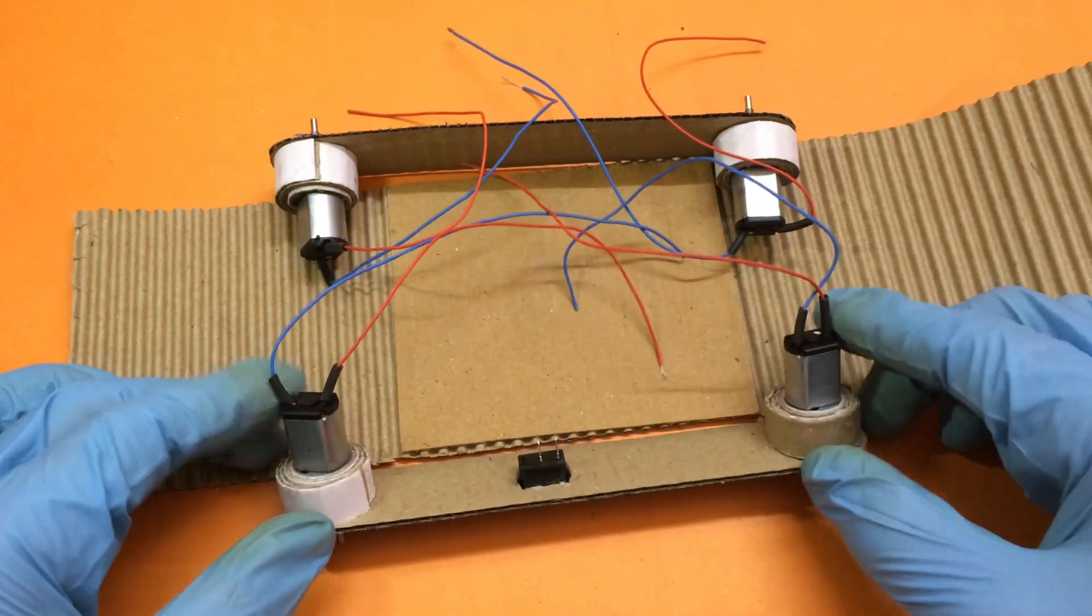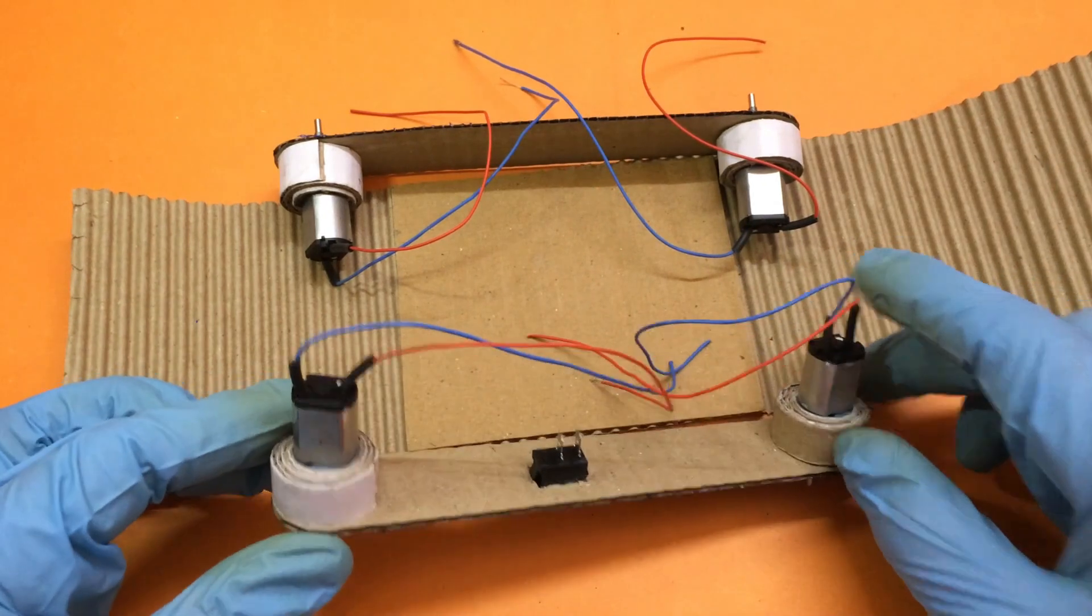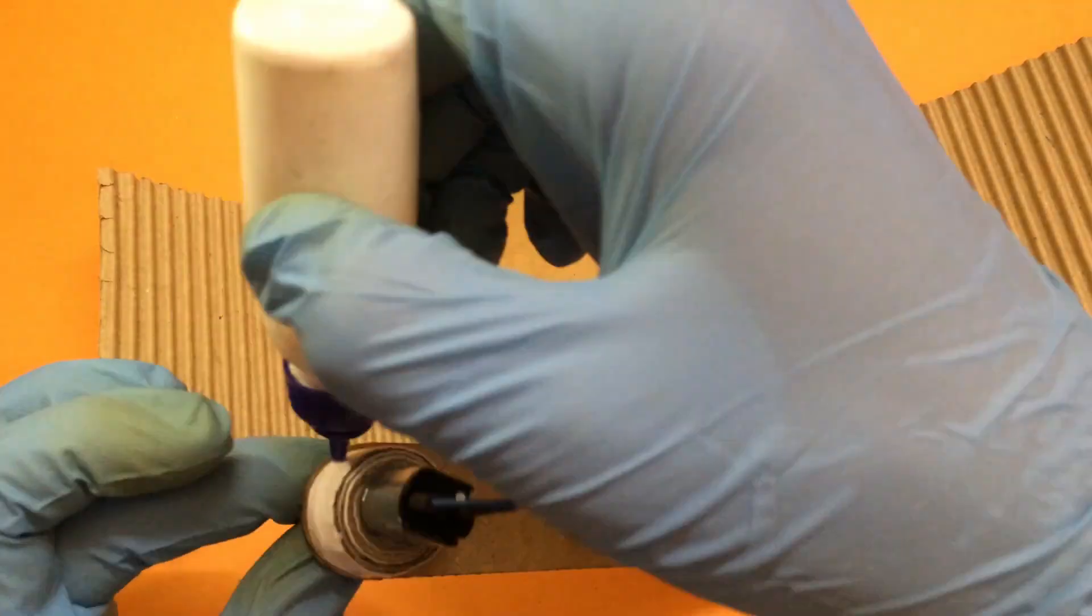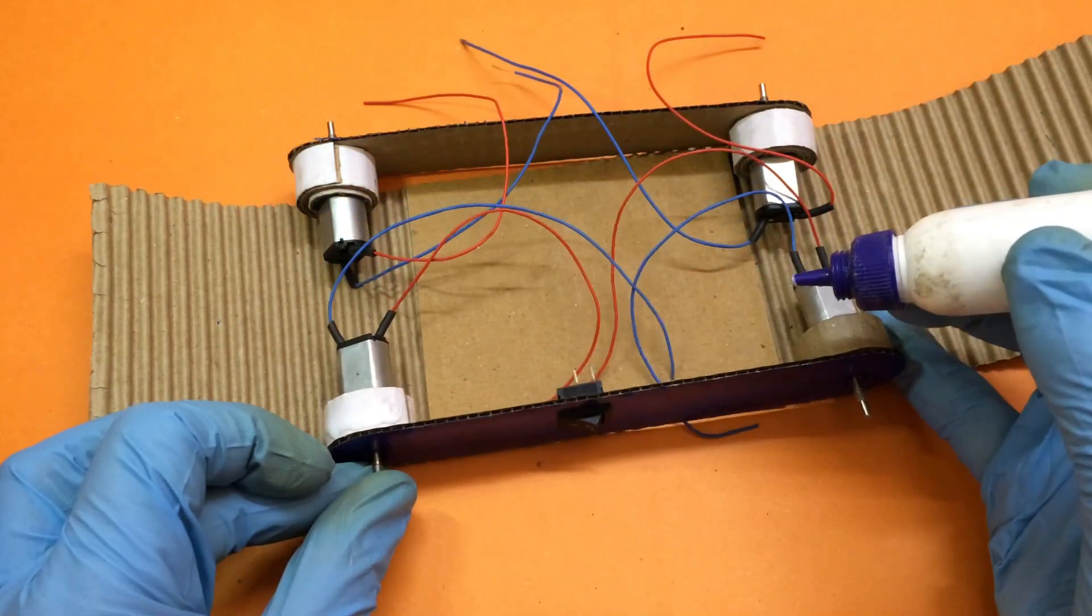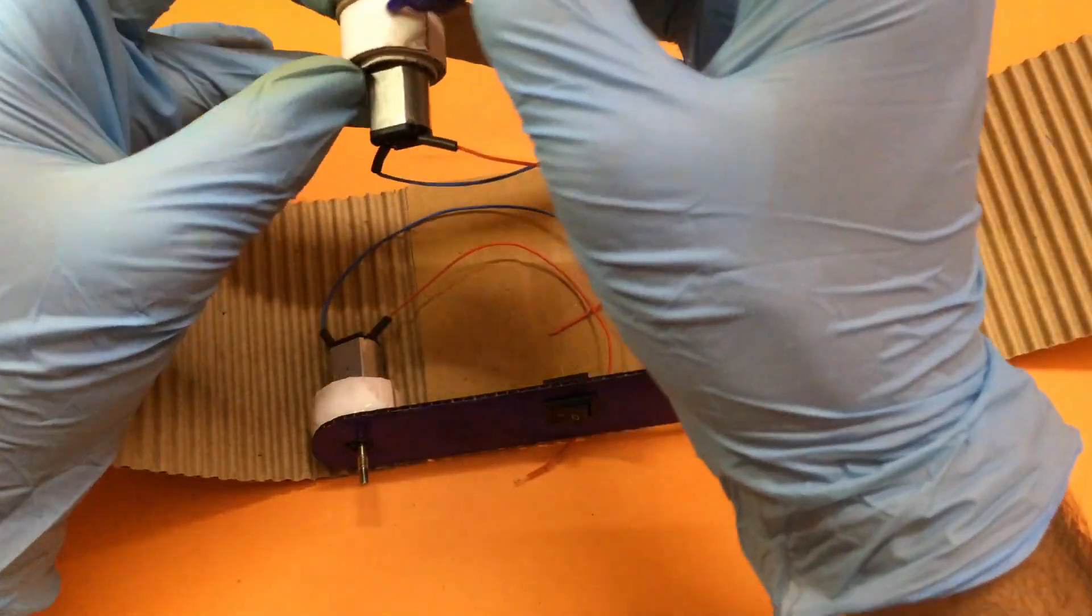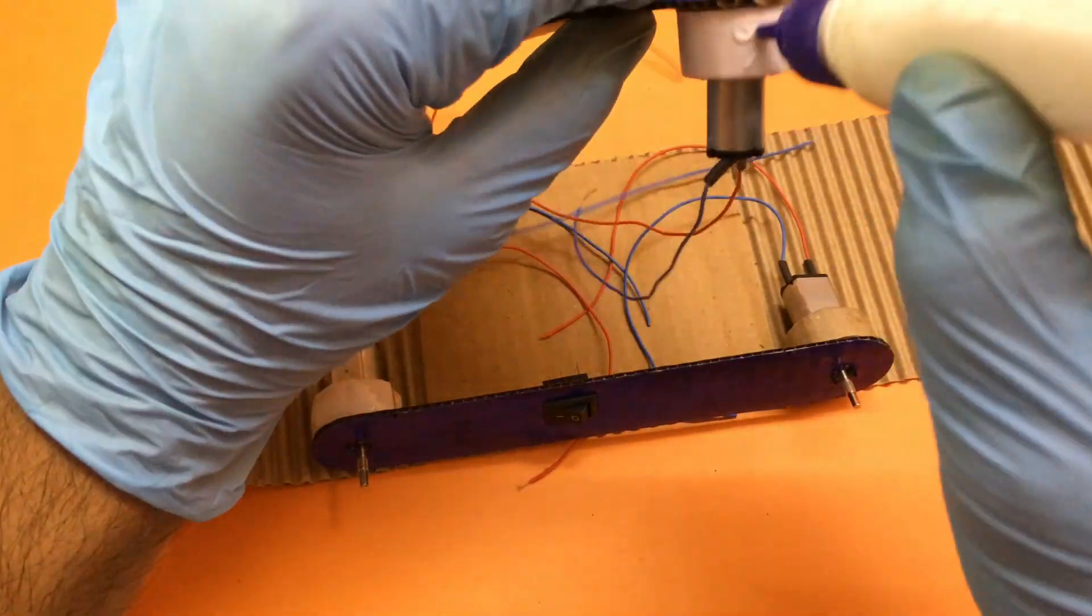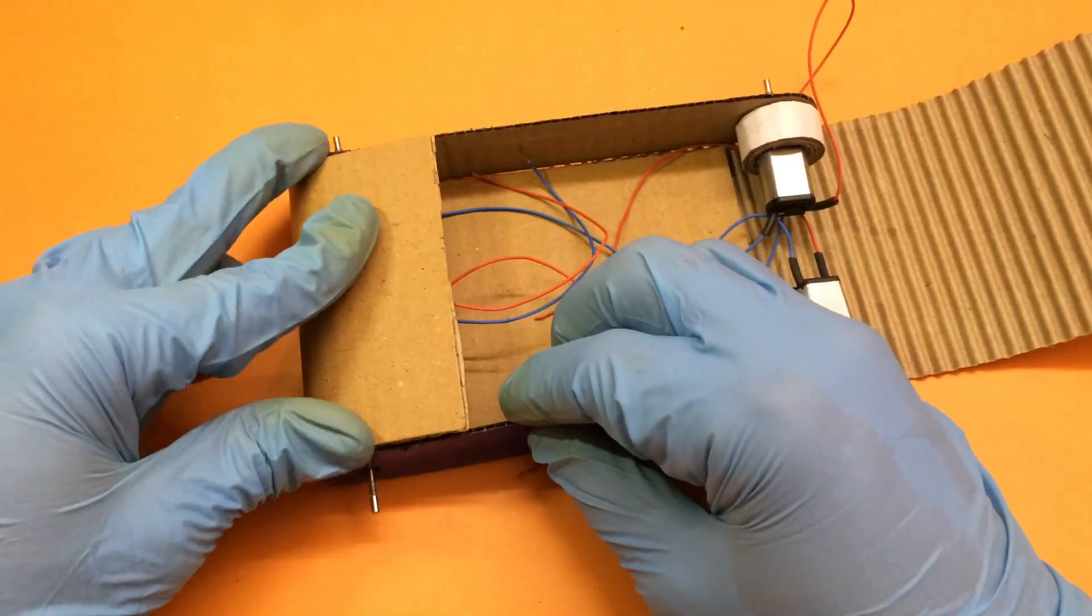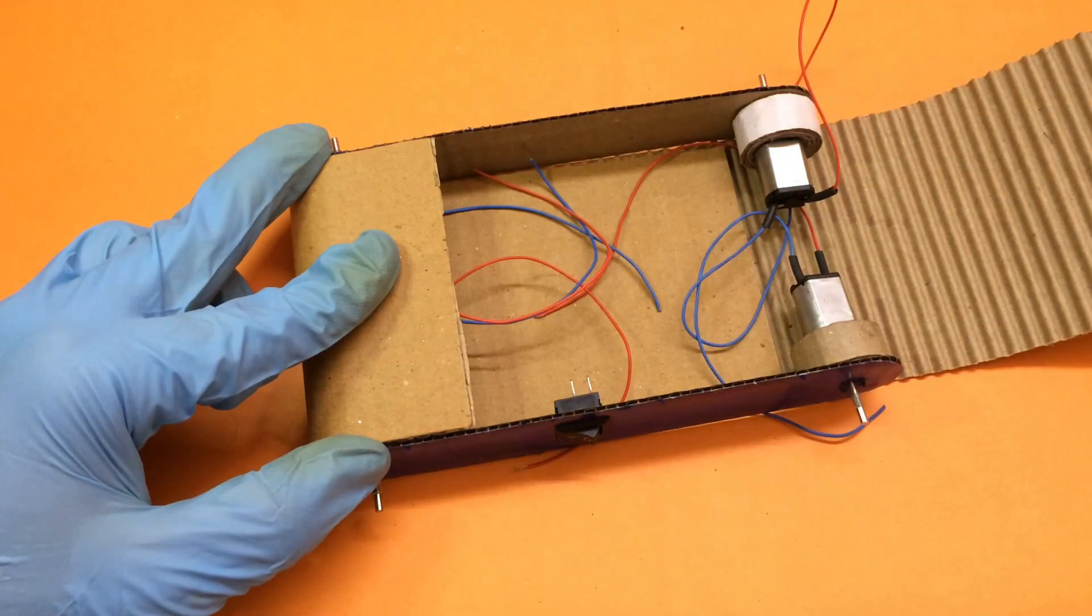While it dries we can prepare the body for RC car. You can take 40 centimeter by 9 centimeter strips of corrugated sheet over which we can stick the side panels. Do attach the wires to the motor before moving to this step. After applying the glue we can secure them tightly together until the glue dries for which we will be using some masking tape.